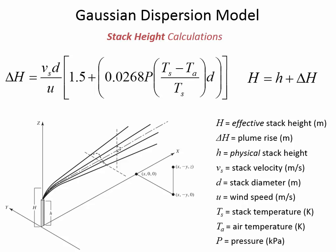The stack is the physical structure; the plume is the smoke. Δh is how much higher above the stack opening the smoke rises before it stabilizes and stops going up. V_s is the velocity of the smoke as it exits the top of the stack, and u is the wind speed — those are the two velocity terms in the formula.